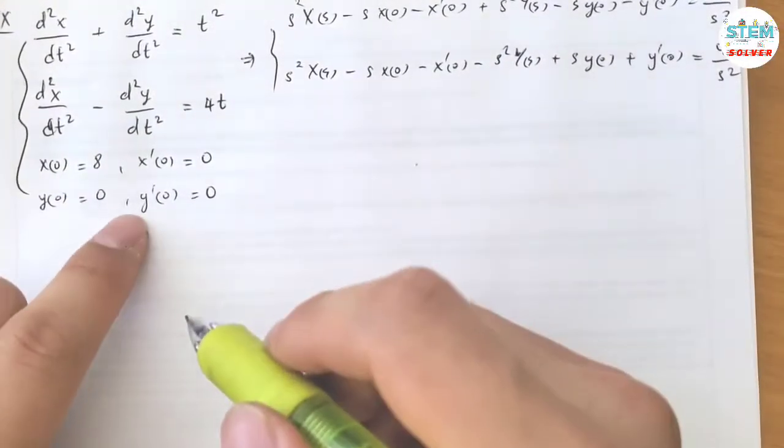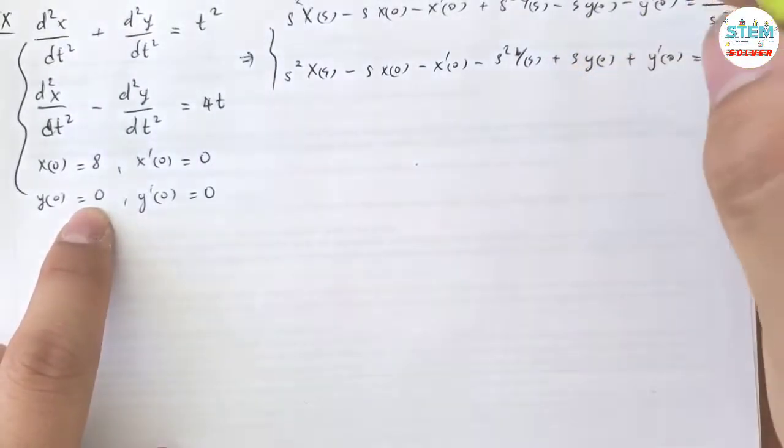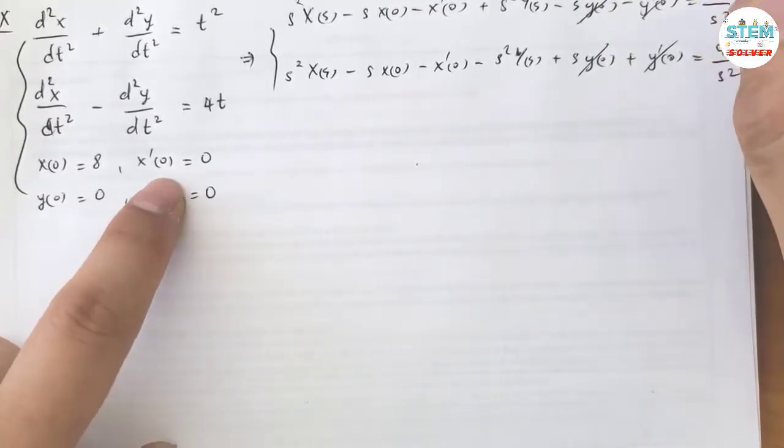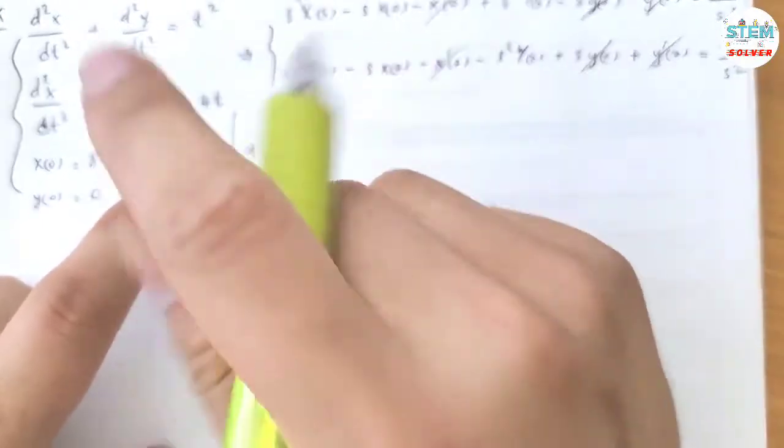Now let's take a look at the conditions. I have zeros: y(0) equals 0, y prime of 0 equals 0, x prime of 0 equals 0. Now simplify this a little bit.